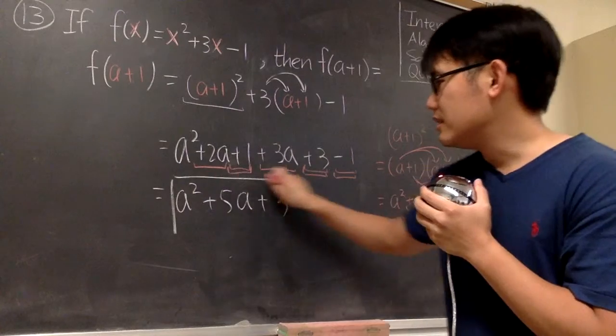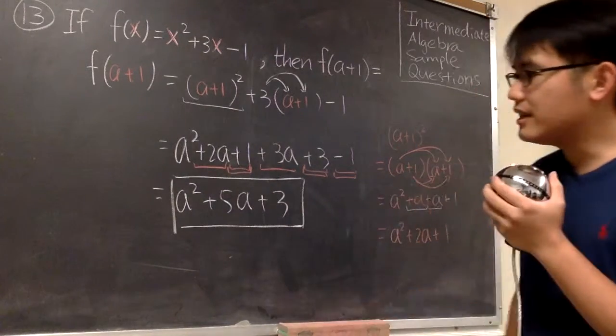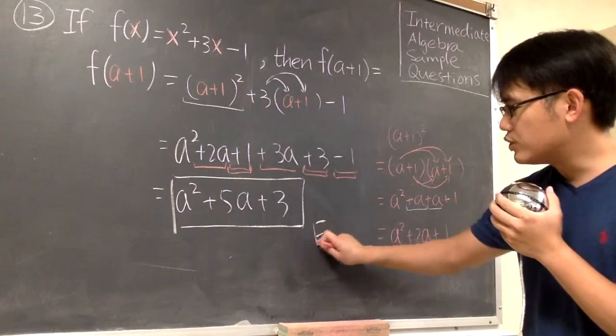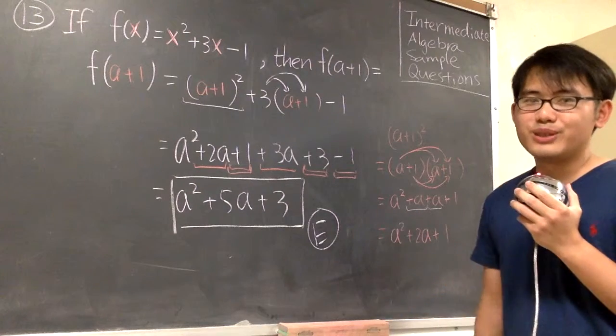So final answer is a² + 5a + 3. This is answer choice E on the answer choices. That's it.